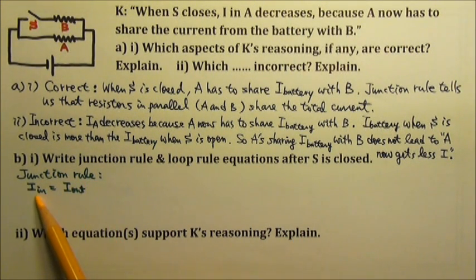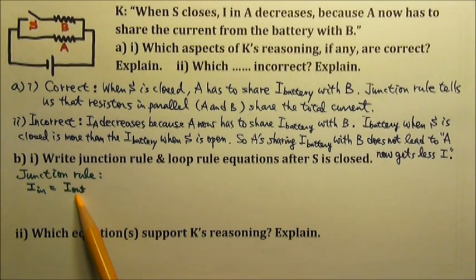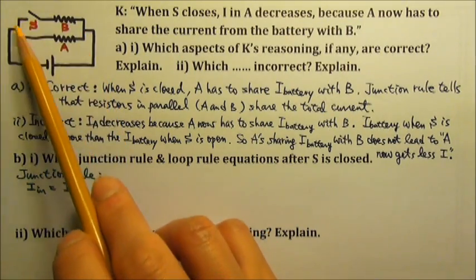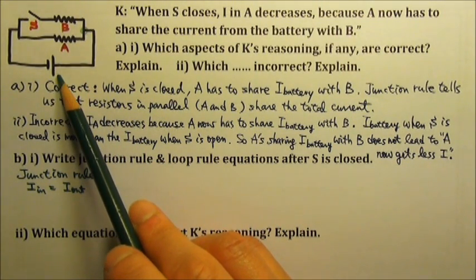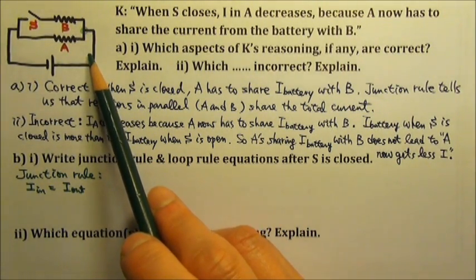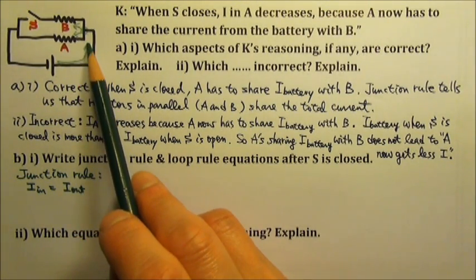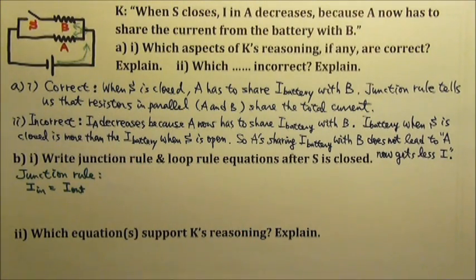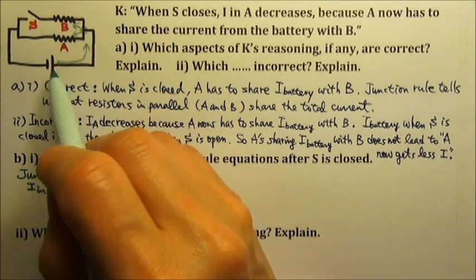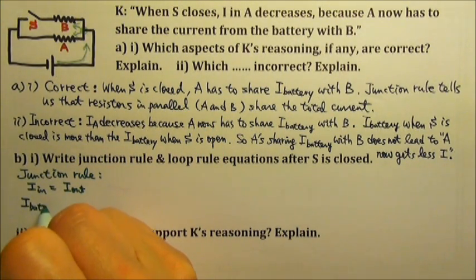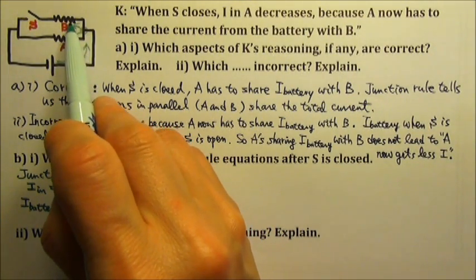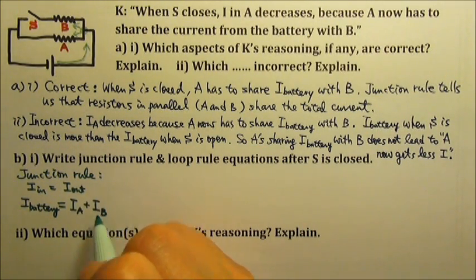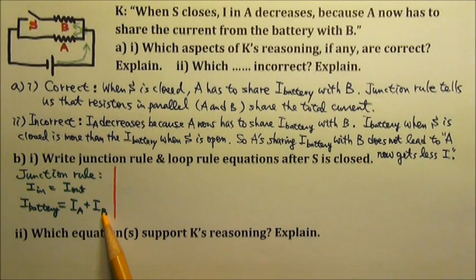For the junction rule, the current going into the junction equals the current coming out of the junction. There are two junctions — we can use either one. The battery pumps current out of its positive terminal, so the current goes counterclockwise and splits into two. The current going into this junction is the current from the battery, and the current coming out is IA and IB. So when we say resistors in parallel share the total current, it is consistent with the junction rule.